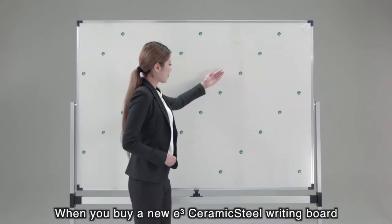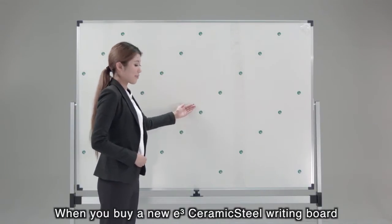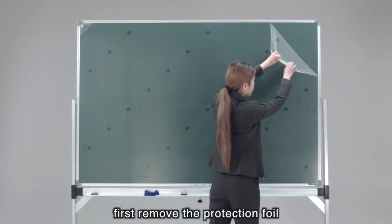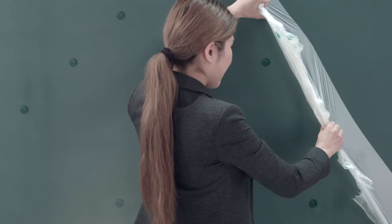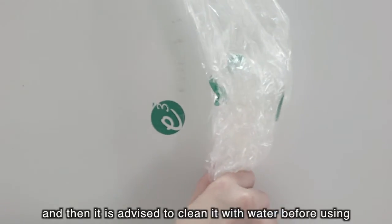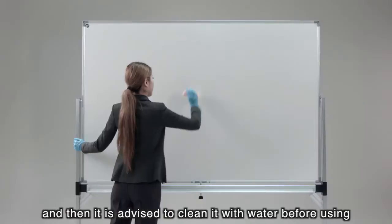When you buy a new e³ CeramicSteel writing board, first remove the protective foil, and then it is advised to clean it with water before using.